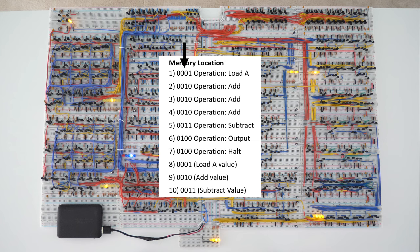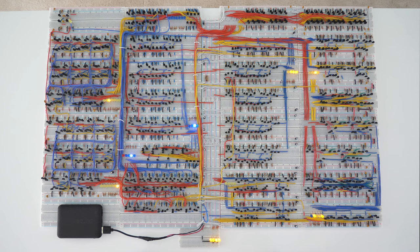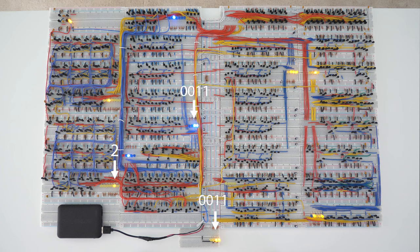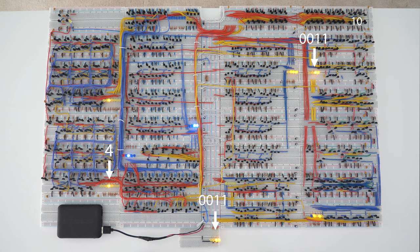These 7 bytes of memory contain the 7 operational codes the computer is running. The opcode values are shown here and correspond to these memory locations. An example of the opcode being used is when the program counter has a value of 5. The 5th memory location will be used, which contains the opcode value 0011. When the ring counter has a value of 2, the opcode value will be placed onto the bus and latched into the opcode register. The opcode decoder will output 0100, which means this is the subtract command. When the ring counter goes to 4, the subtract value from memory location 10 is placed on the data bus and loaded into register B. Finally, when the ring counter goes to 5, the subtract circuit is enabled, the ALU is connected to the data bus, and the ALU output value of 7 minus 3, which is 4, is latched into the accumulator register.